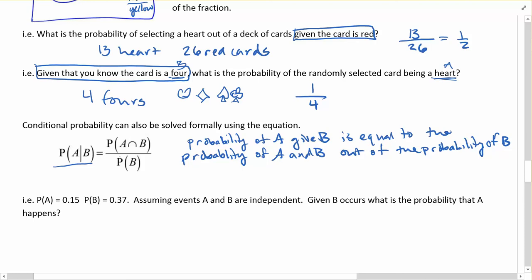You can use that, but let's take a look at it in terms of these numbers here. So the probability of A and probability of B, assuming A and B are independent. Given B occurs, what is the probability that A happens? Given B occurs, that means that goes to the bottom of my fraction, that is the out of part.